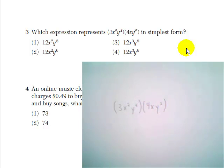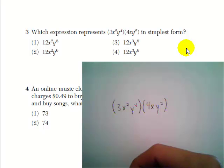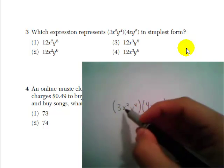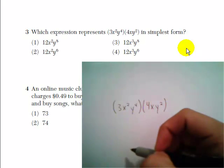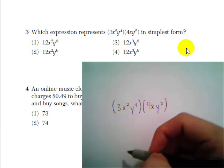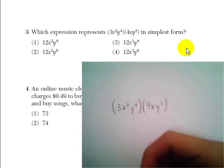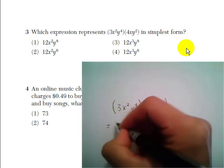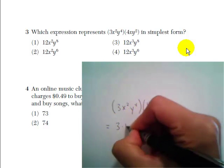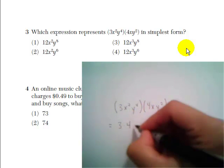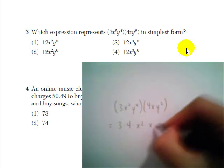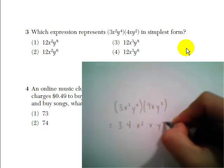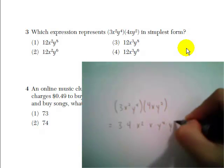Now, remember with monomials, we're going to multiply the coefficients, and we're going to multiply the like variables. So we're going to multiply 3 and 4, we're going to multiply x squared and x, and we're going to multiply y to the fourth and y squared. So I'm going to just write that out so we know all the multiplications that we're using. 3 times 4 times x squared times x times y to the fourth times y squared.